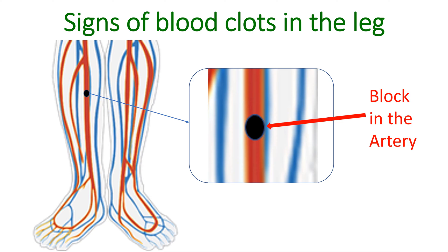If the occlusion of the artery persists for a long period, the limb will become black, with death of cells — called gangrene.